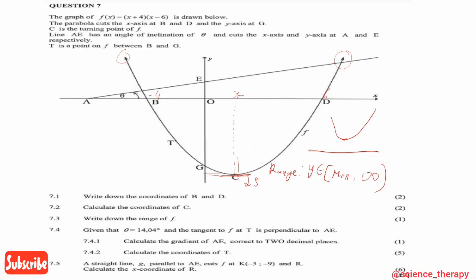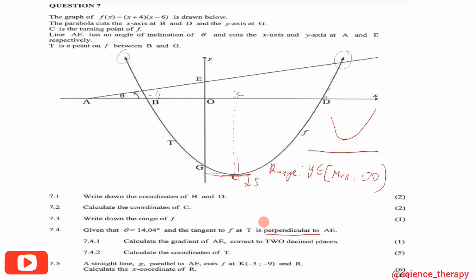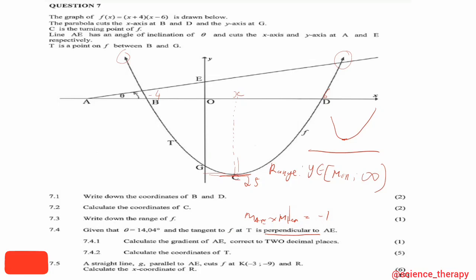Question 7.4 says: given that theta = 14.04 degrees and the tangent to f at T is perpendicular to AE, calculate the coordinates of T. We know that if two lines are perpendicular, the product of their gradients equals -1. So gradient of AE multiplied by gradient of the tangent equals -1.